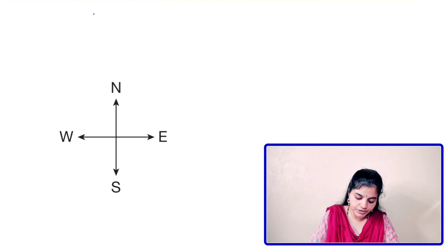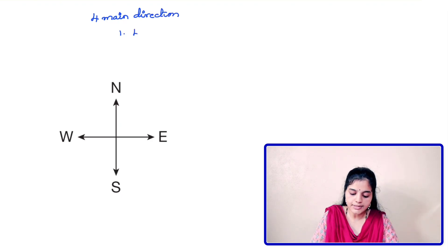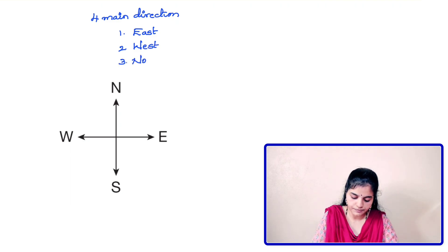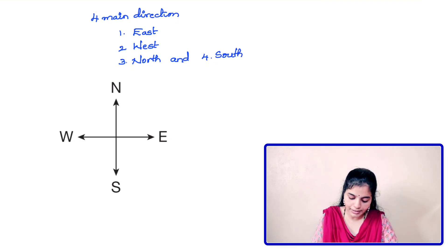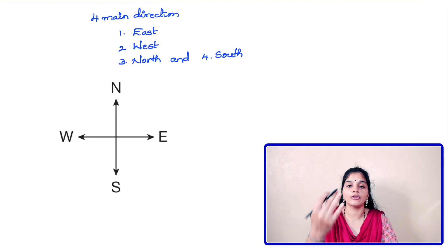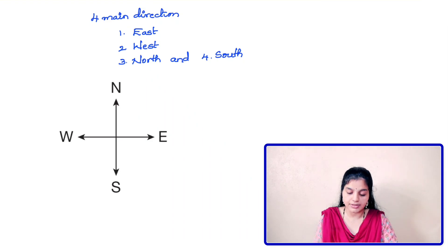There are four main directions: east, west, north, and south. Along with these four main directions, we have four cardinal directions. They are northeast, southeast, southwest, and northwest.